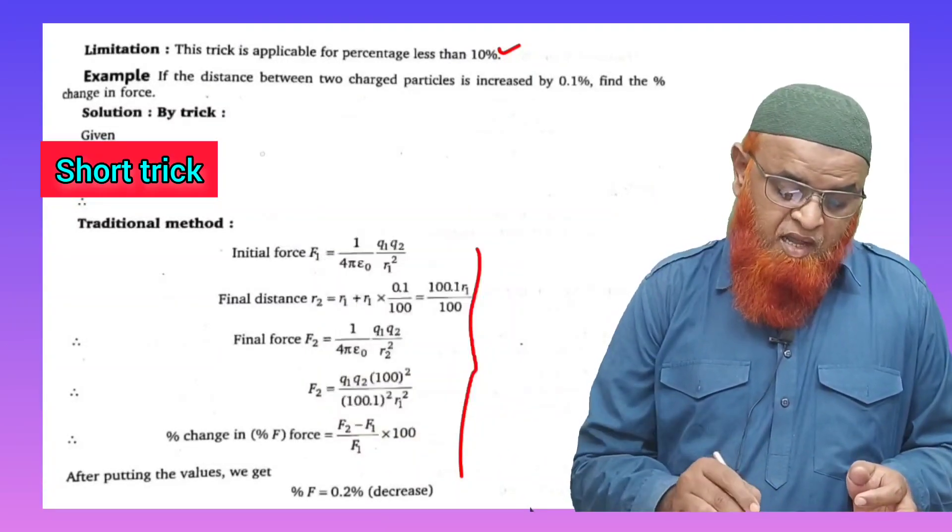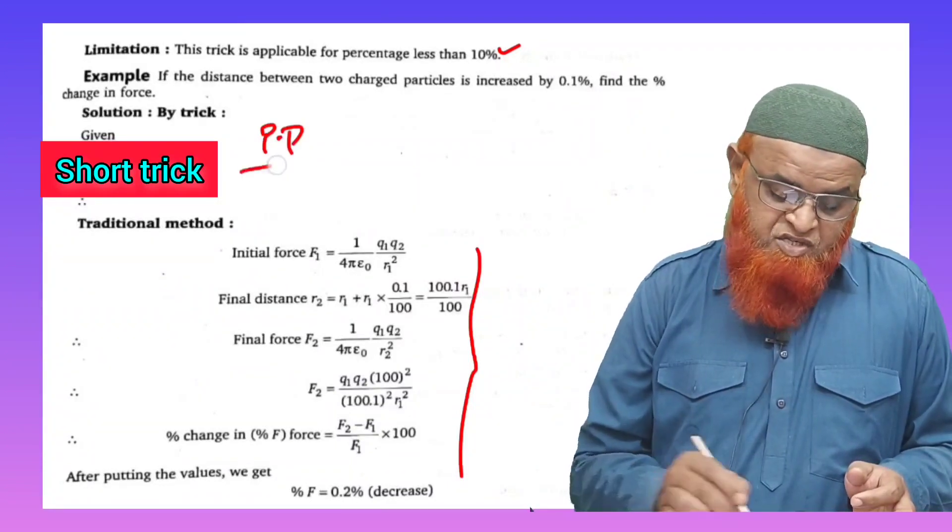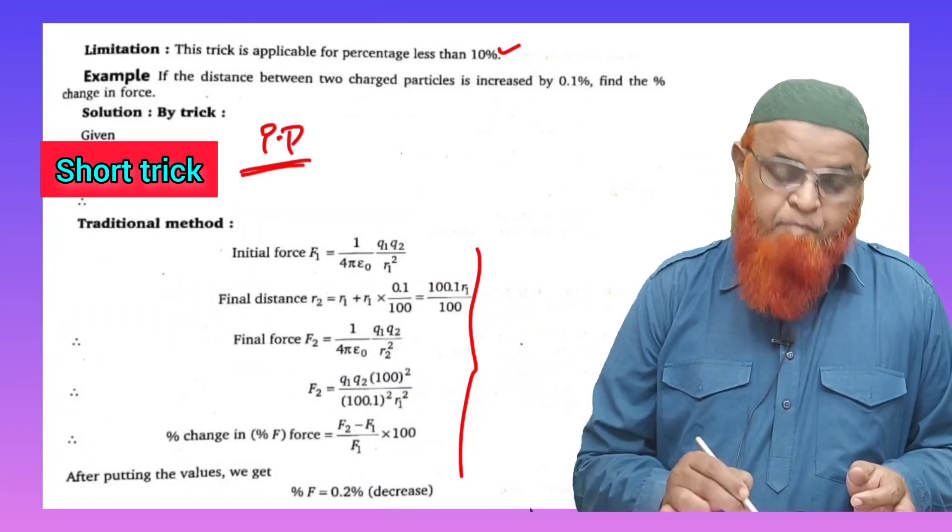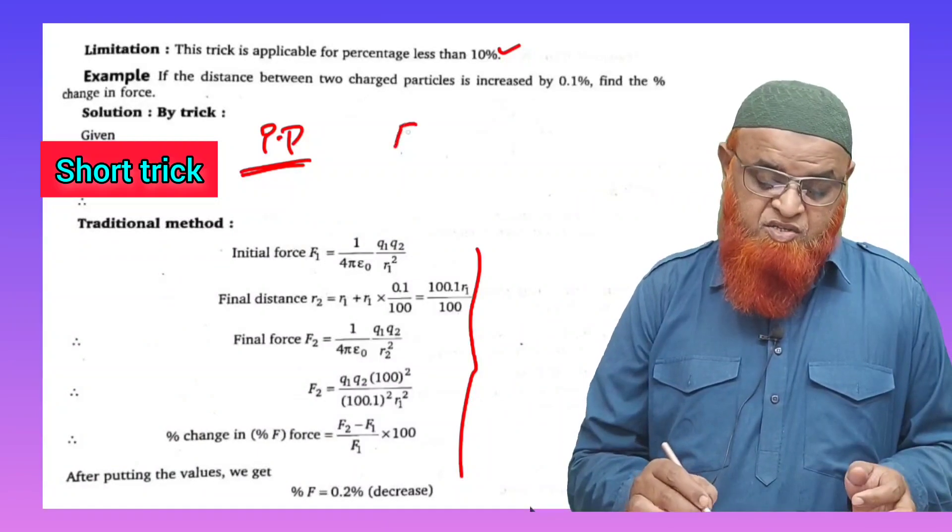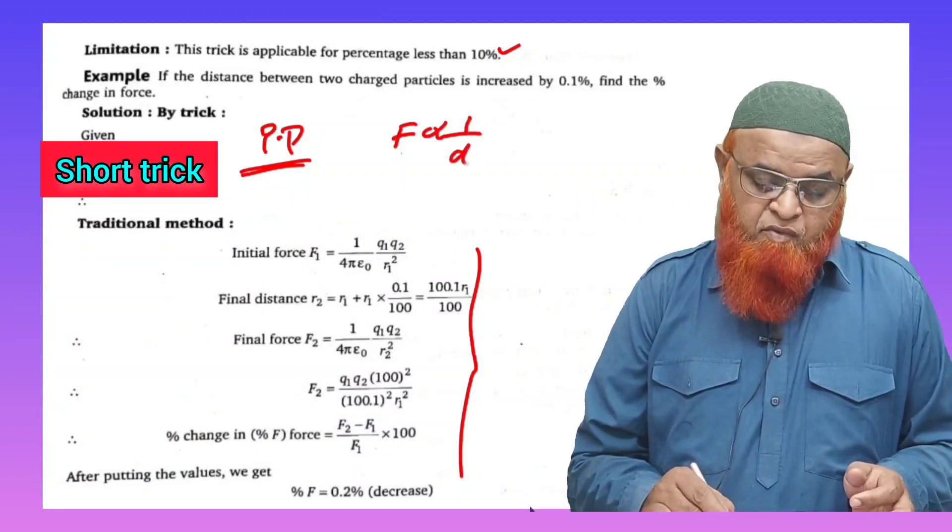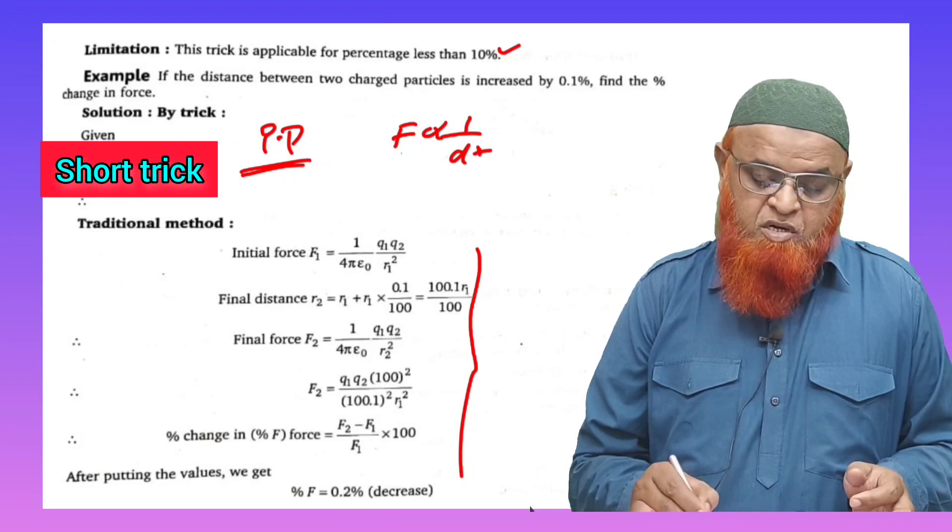The trick which I am going to discuss here is called the power percentage technique. So it is called the PP trick - power percentage trick. You all know that according to inverse square law, force is inversely proportional to d square.